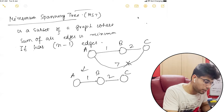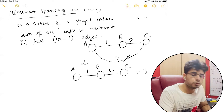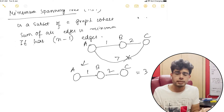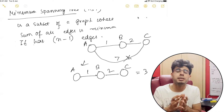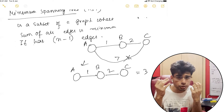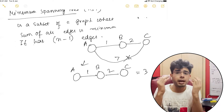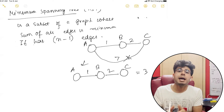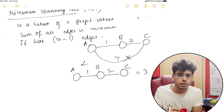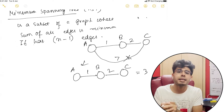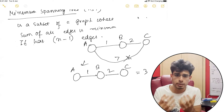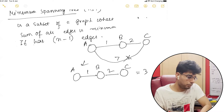That gives us a minimum cost of 3, and we connect all the edges. In other words, the graph is connected at the end, we take the minimum edges for that, and our cost is minimum.